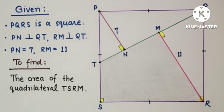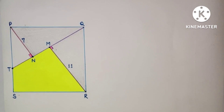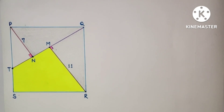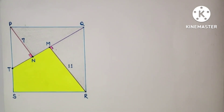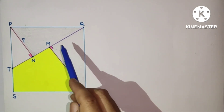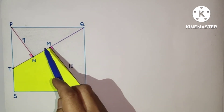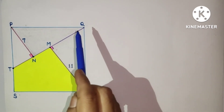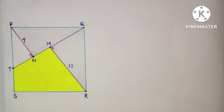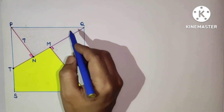We have to find the area of the quadrilateral TMRS. To find that, we find the area of the square PQRS and subtract the two triangles — area of triangle MQR and area of triangle QPT. Let us suppose this angle is x.